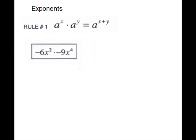The next problem is also just a multiplication. Go ahead and multiply the numbers — just watch your sign rules. You're multiplying two negatives, that's an even number of negatives, so it will be a positive 54. For your variables, you will keep the base and add the exponents.